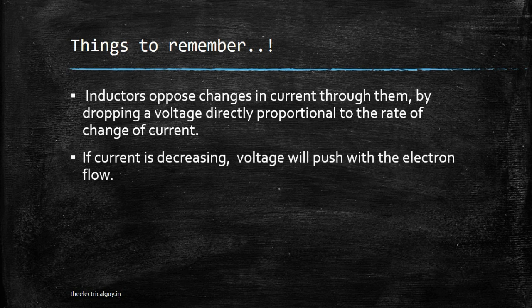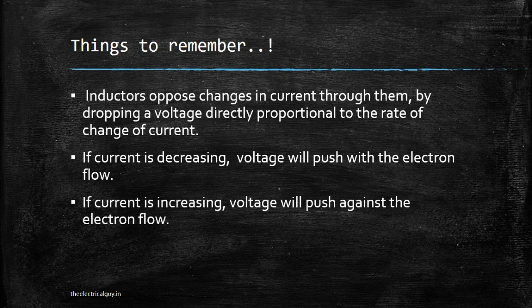If current is decreasing, voltage will push with the electron flow and that will keep the voltage at a constant level. If current is increasing, voltage will push against the electron flow and that will drop the current and again keep it at a constant level.